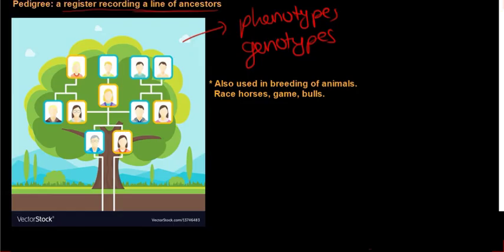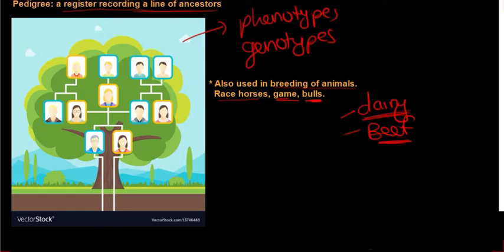This is largely used in the breeding of animals such as racehorses, game like sable or black impala, and in the agricultural industry with bulls and cows. In South Africa you get dairy cows and beef cows based off of yield. Farmers want to get a cow with large dairy yield per day or a lot of meat off one carcass.